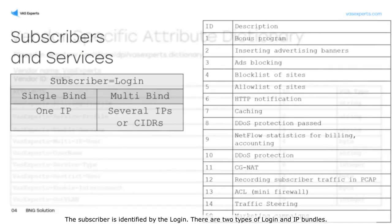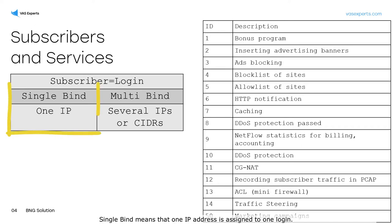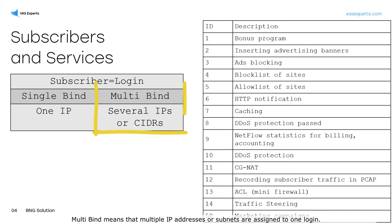The subscriber is identified by the login. There are two types of login and IP bundles. Single-bind means that one IP address is assigned to one login. Multi-bind means that multiple IP addresses or subnets are assigned to one login.